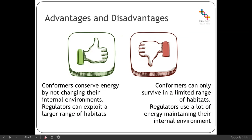Overall there are a few advantages and disadvantages to being either a conformer or a regulator. A conformer's main advantage is conserving energy by not going through homeostatic processes — their internal environment fluctuates with the external environment. However, the disadvantage is that they can only survive in a limited range of habitats. Regulators, on the other hand, are able to exploit a larger range of habitats, maintaining their osmolarity by excreting or taking in water and maintaining their temperature through behavioural or physiological mechanisms. However, that uses up considerably more energy than conformers.